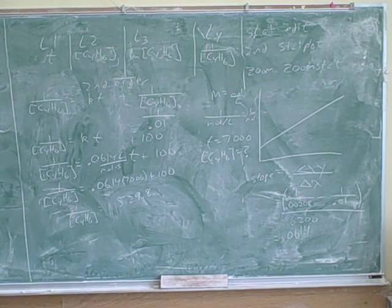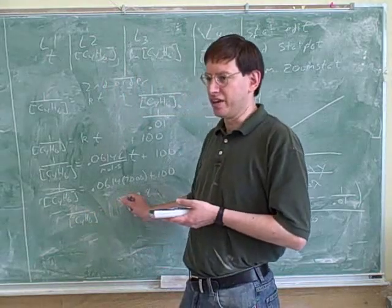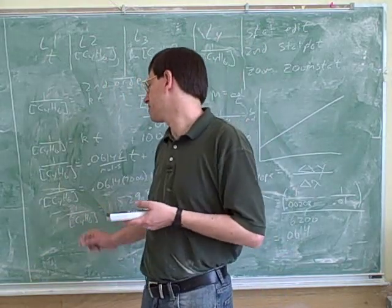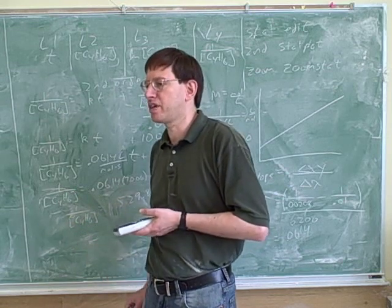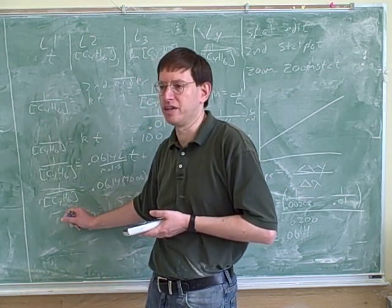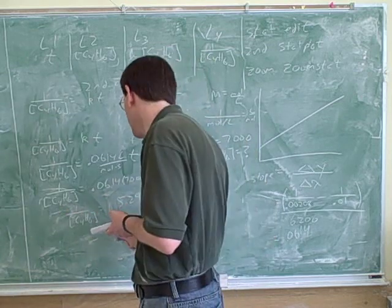So the main thing I wanted to point out here is this number is not the answer. Because our vertical variable wasn't C4H6, it was the reciprocal of C4H6. So we have to solve for that. Just like in the previous case with the first order reaction, we had to get rid of the natural log before we could get the right answer. Here it's easier.